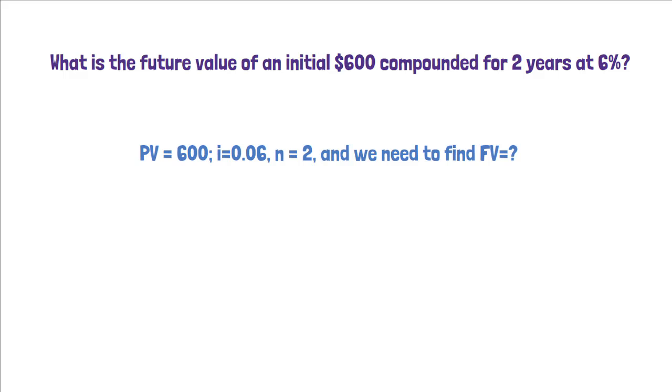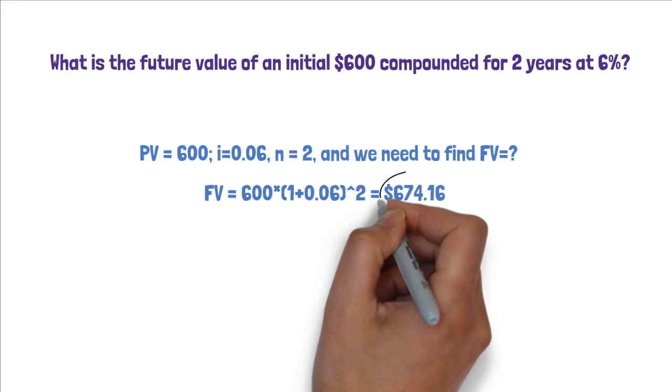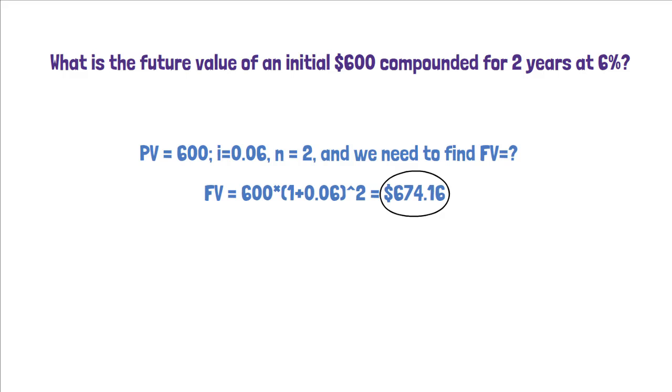So let's apply the formula, FV equals 600 times 1 plus 0.06 to the power 2. When you solve this equation, you get 674.16.